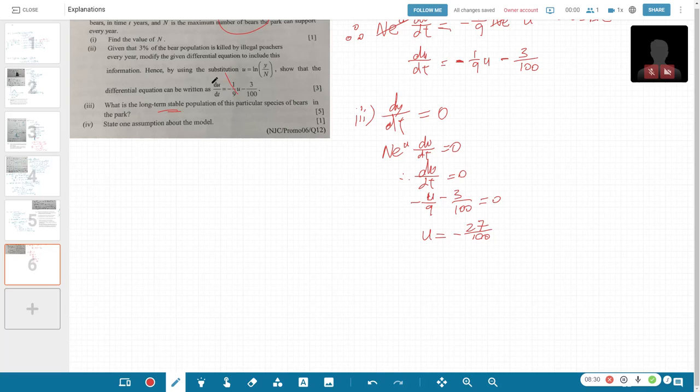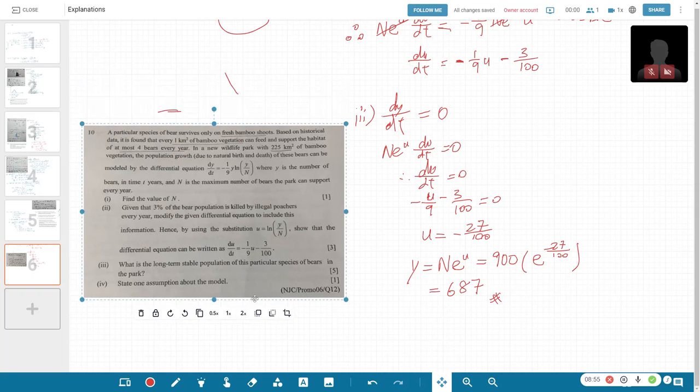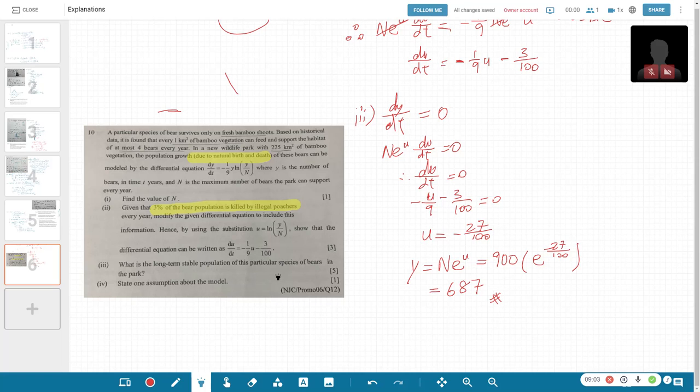So once we have this, we want to find the long-term stable population. Now we know that Y equals Ne^U, which is 900 e^(-27/100). Put into your GC, you should get 687. So that is the long-term stable population. This long-term stable population is based on both the natural birth and death, as well as the 3% population that is killed by the illegal poachers.